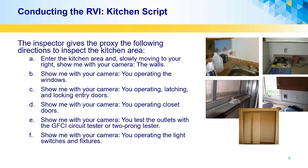Now we're going to look at the protocol for inspecting the kitchen following the script. The inspector gives the proxy the following directions: enter the kitchen area and slowly moving to your right, show me with your camera the walls. We're establishing a certain rhythm — always directing the proxy to move to the right. Show me with your camera you opening the windows; you may need to hold your camera to unlock and then raise the window. Show me with your camera you operating and latching and locking entry doors. Show me with your camera you operating closet doors. Show me with your camera you testing the outlets with your GFCI tester or two-prong tester. And show me with your camera you operating the light switches and fixtures.